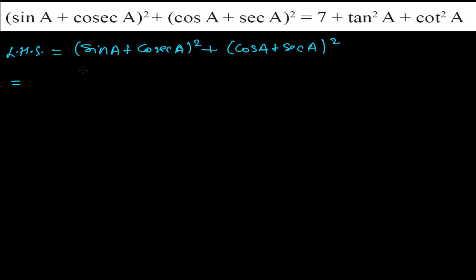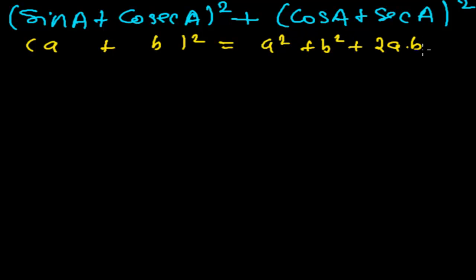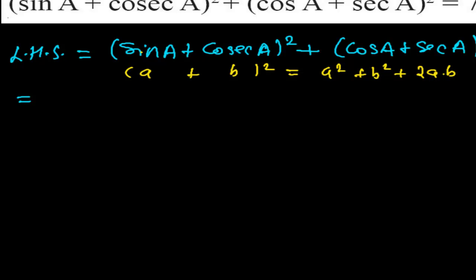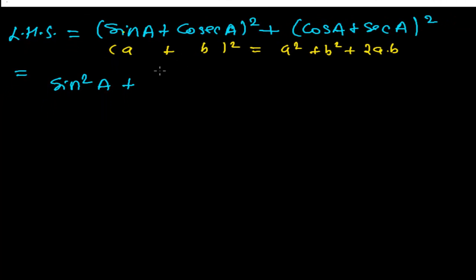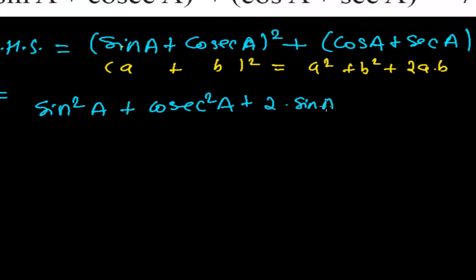So what can we do here? Since this is in the form of (a + b)² and this is also in the form of (a + b)², I am going to use the formula a² + b² + 2ab. So expanding the first term: sin²a + cosec²a + 2·sin a·cosec a.